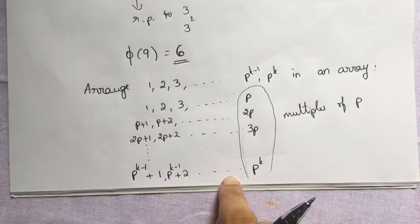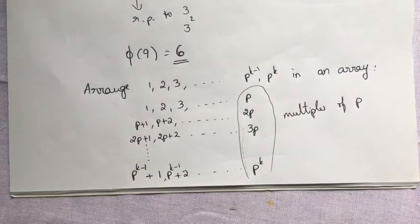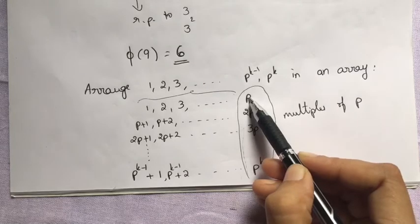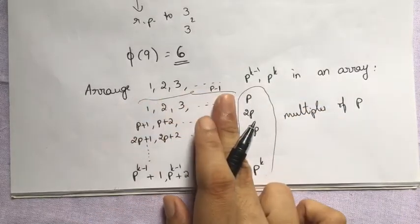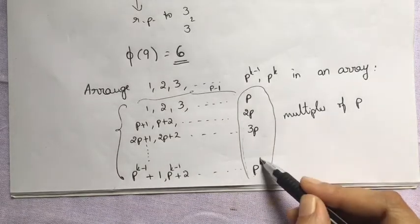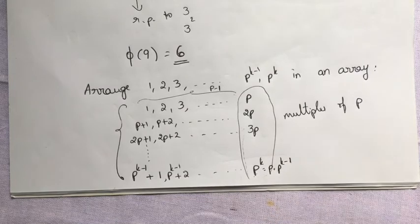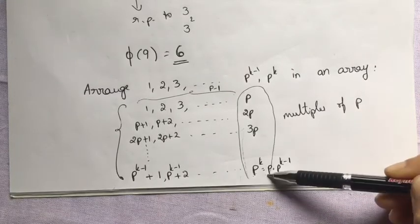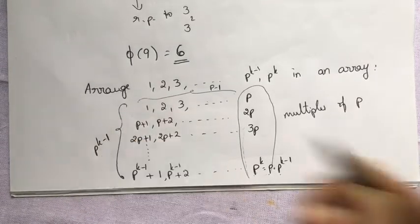phi(p^k) counts numbers less than p^k which are relatively prime to p^k. How many columns are there? There are p-1 columns (excluding the multiples-of-p column). How many rows? The last column goes from p, 2p, 3p, ..., up to p^(k-1) × p, so there are p^(k-1) rows.